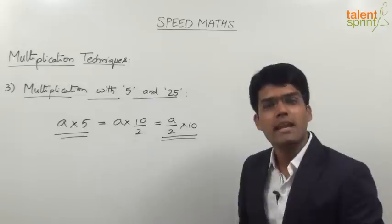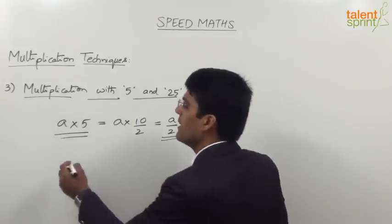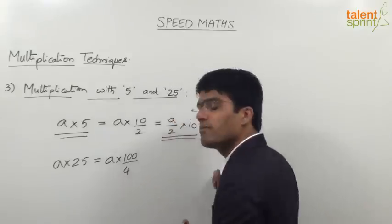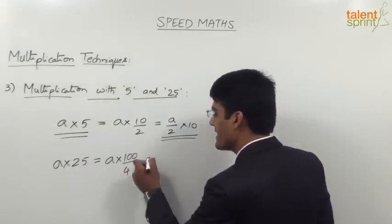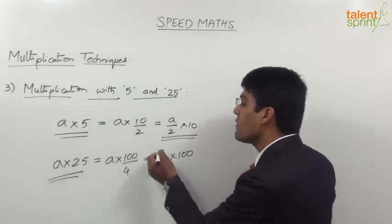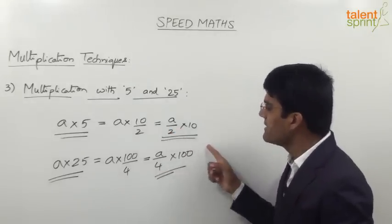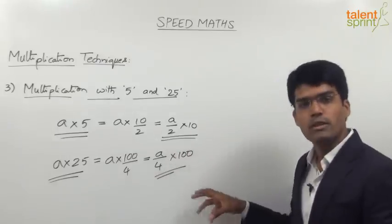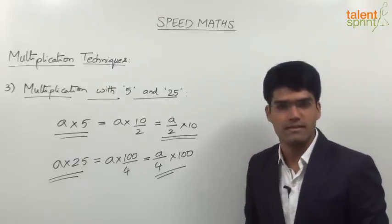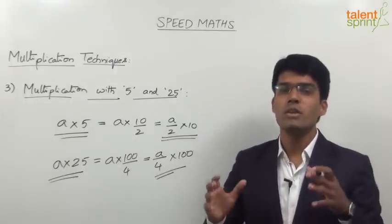Let us now move on to see how to multiply a number with 25. Once we have done 5, multiplying with 25 should be easy to understand. Let us say a number A has to be multiplied with 25. The best way is to take 25 as 100 divided by 4, so A into 25 becomes A by 4 into 100. You take one fourth — a quarter — of the number and multiply with 100. Each step here is very easy and comfortable, so the answer can be obtained faster.